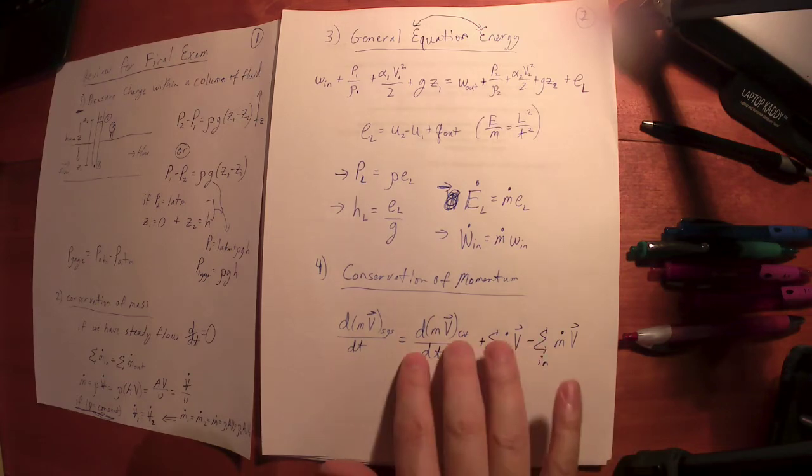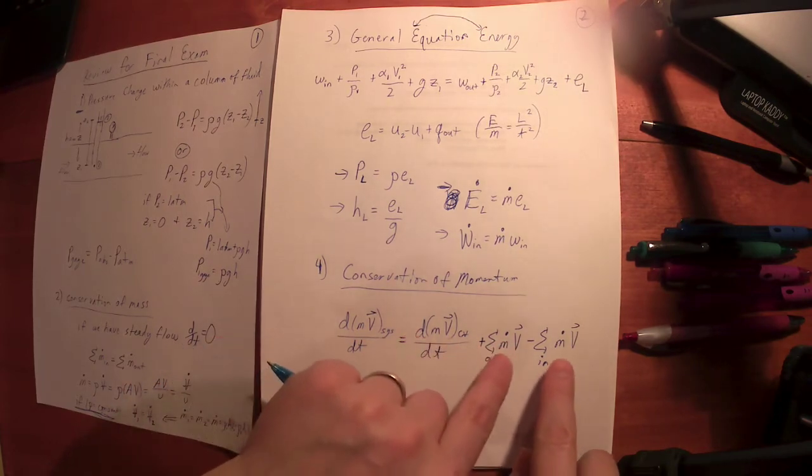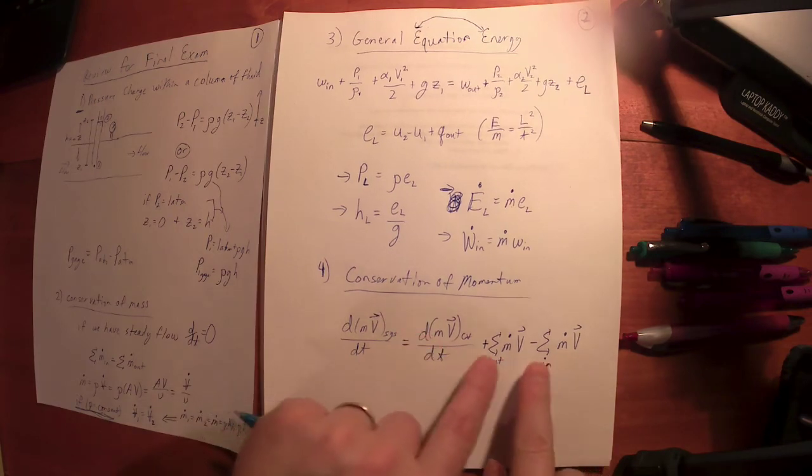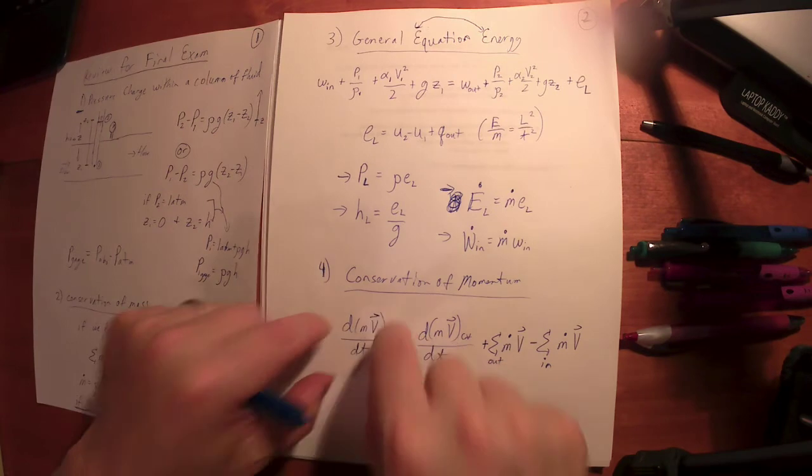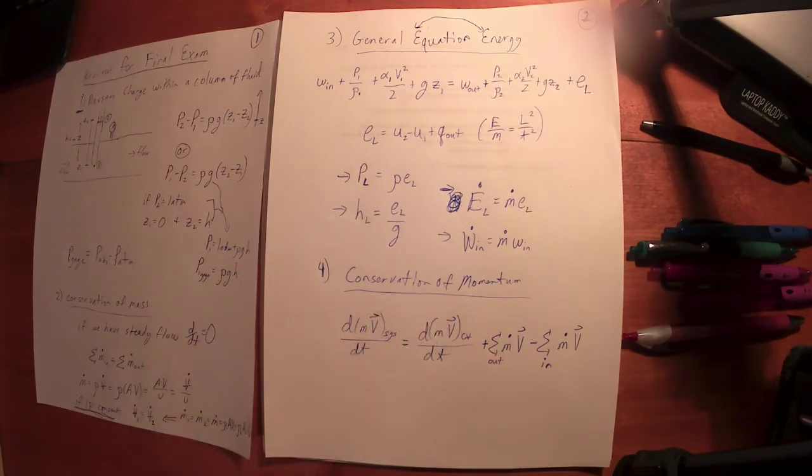So m times speed, or m times velocity is momentum. Mass times velocity is momentum. This is momentum rate. So this is the rate of momentum change into and out of the system. So the total momentum change coming through our control volume.